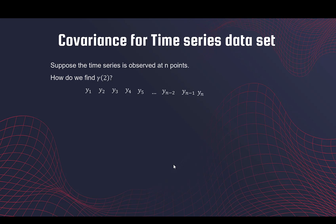Now how do we find gamma 2? Gamma 2 is basically the autocovariance function with lag 2. Because of stationarity, we focus only on lags. These are the n observations.